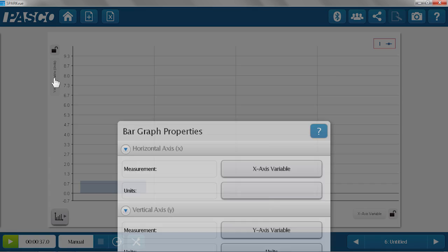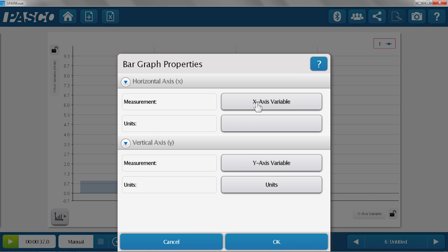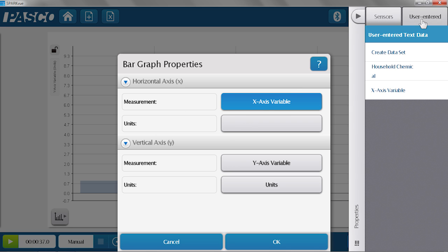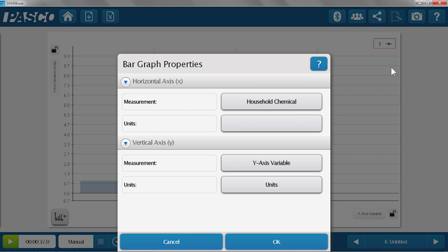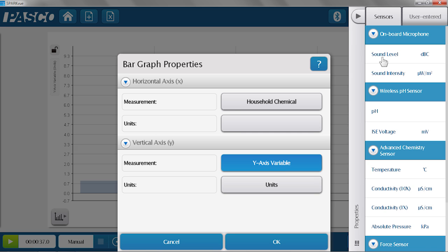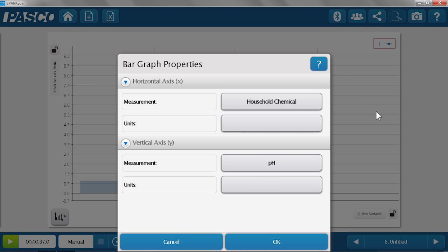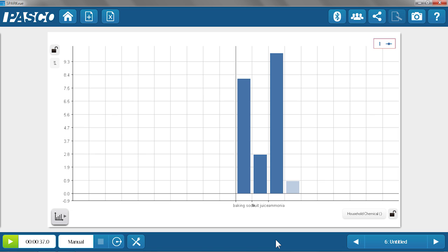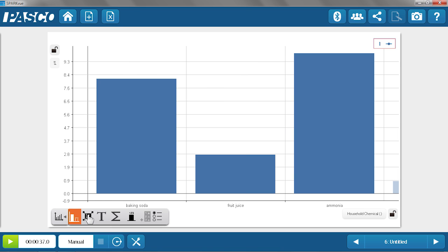And now I need to assign those axes. So I'm going to click on one of the axes and my x-axis I'm going to make the household chemicals that I added. And my y-axis I'm going to make the pH. I'm going to hit OK. Here's my bar graph. I'm going to adjust that a little bit so I can see it better. And there we go. We have a nice visual representation for the students to really understand the pH of those household chemicals.